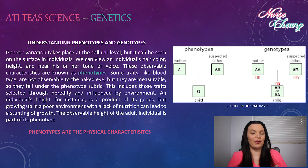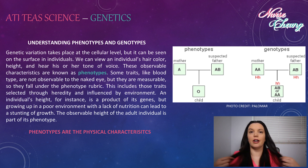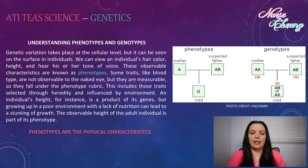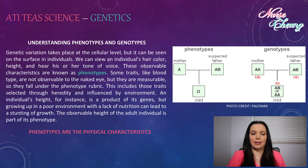Genetic variation takes place at a cellular level but can be seen on the surface of an individual. We can view the individual's hair color, height, or hear their tone of voice. These observable characteristics are known as phenotypes. Some traits like blood type are not observable to the naked eye, but they are measurable, so they fall under the phenotype rubric. This includes traits selected through heredity and influenced by environment. An individual's height, for example, is a product of its genes, but growing up in a poor environment with a lack of nutrition can lead to a stunting of growth.